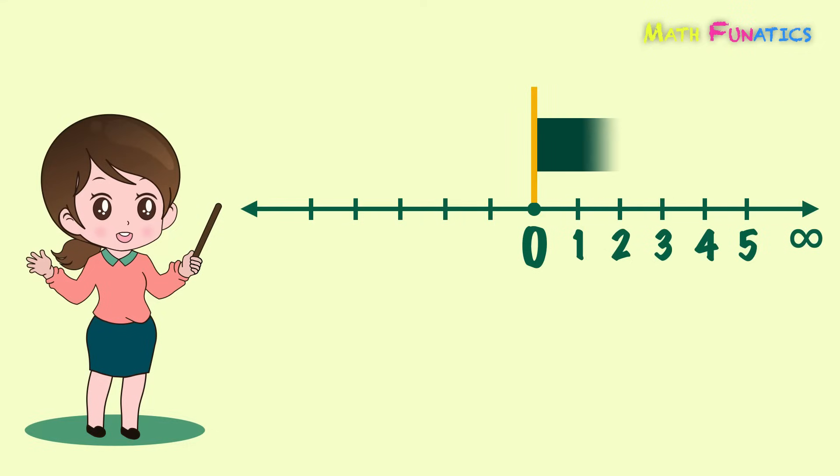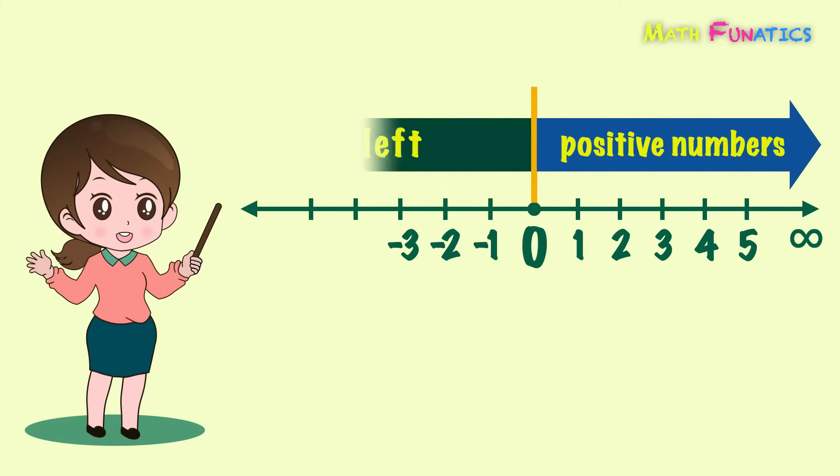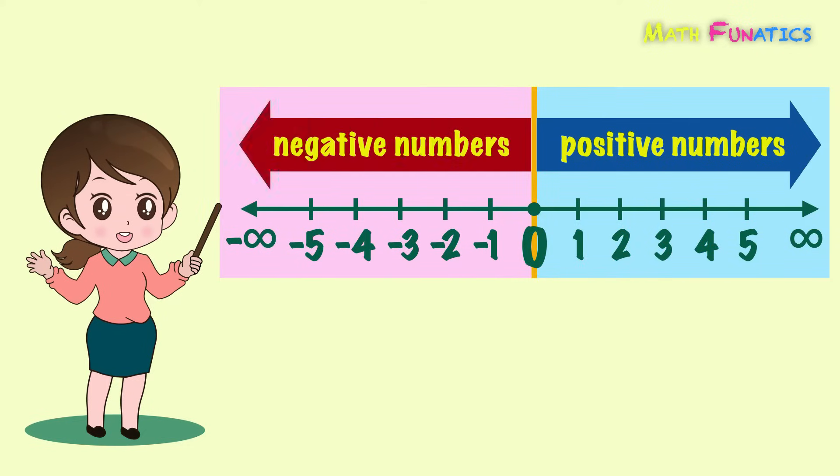These whole numbers on the right, which we knew as the counting numbers, are also referred to as positive numbers. On the left of 0 on the number line are these numbers. They are just like a mirror image of the numbers on the right. These numbers are referred to as negative numbers.